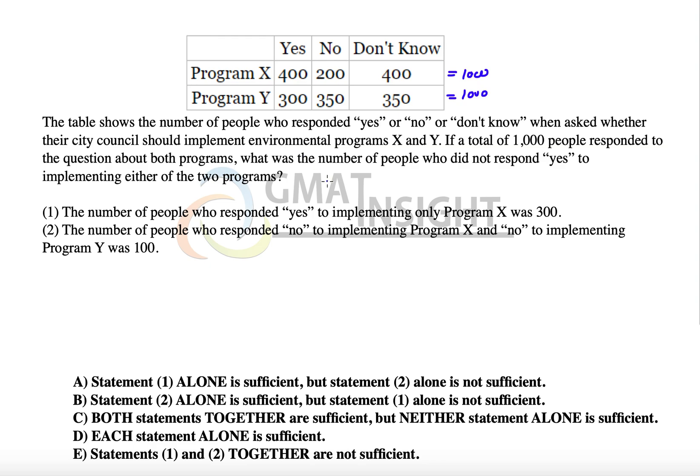We have to count the total people who did not respond yes. Understand that people who did not respond yes does not mean who responded no - it also includes people who said don't know.